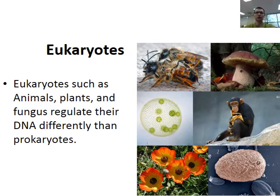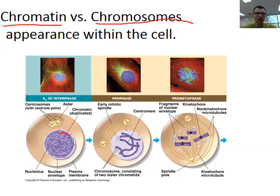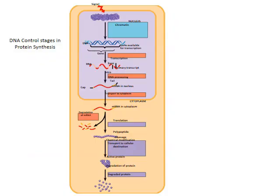Eukaryotes regulate DNA a little differently. DNA control in eukaryotes differs because we have a nucleus where DNA is stored in chromosomes and chromatin. Chromatin is a mass of genetic material that's not very compact, but it condenses tightly into chromosomes. When DNA is wound up very tightly, it cannot be transcribed — enzymes can't get to it. After the chromatin is unwound, there are several opportunities for genes to be regulated, and parts can be recycled for later use.